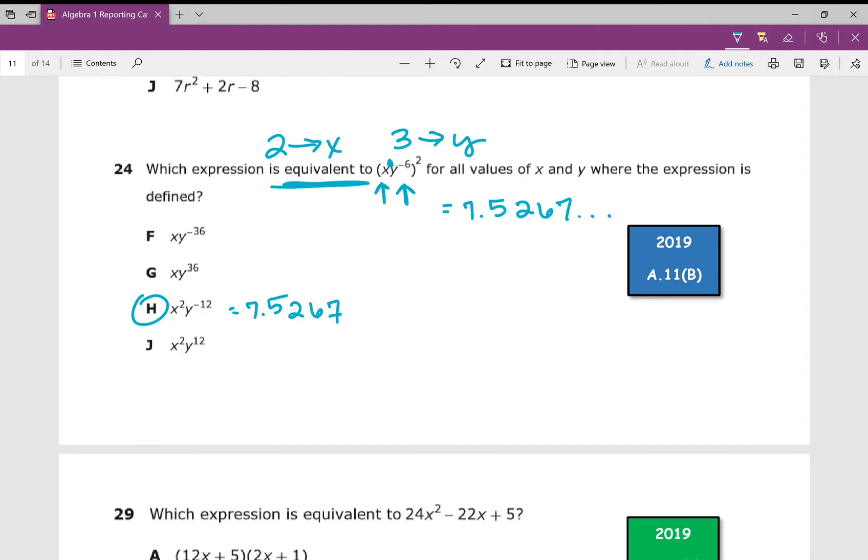Obviously, if you're using your exponent rules, you would get x² times y^(-12), which if you see a negative exponent, move it, make it positive. You don't even have to do that here. It's already got y^(-12). There you go.